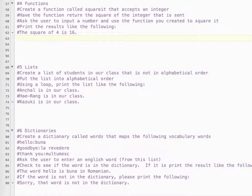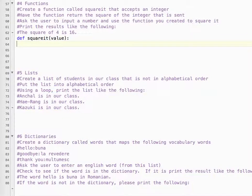Okay, so we need to create a function. So we use def, the keyword. The function is called squareit, and it accepts one value. So value, it doesn't matter what we call it.